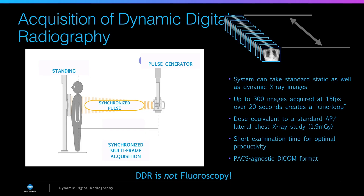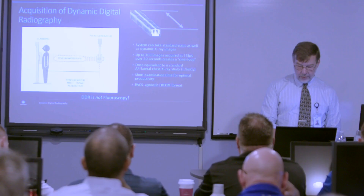The basic technology is pretty simple where we synchronize the pulse between the pulse generator and the panel. This is one of the key features that allows us to keep a low dose. Similar to pulsed fluoro, you're not just shooting a continuous beam of radiation. It's synchronized with the panel, so we can be very tight with the pulses at a very low dose.